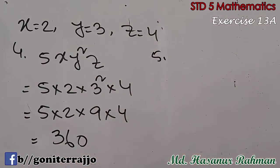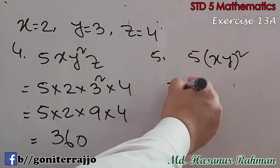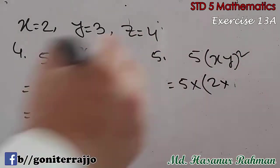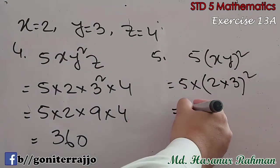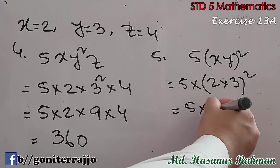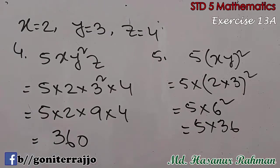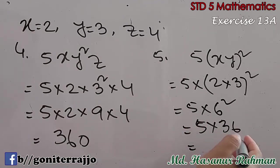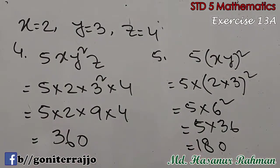Now number 5: (5xy) whole square. So here 5 into the value of x, which is 2, into the value of y, which is 3, whole square. That will be 5 into (2 times 3), that is 6, whole square. So 5 into 36, because 6 squared means 36. Now we multiply 5 into 36: 5 times 6 is 30, carry 3; 5 times 3 is 15, plus 3 is 18. So 180 will be the answer of number 5.